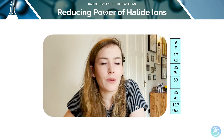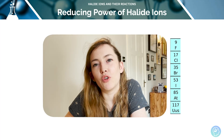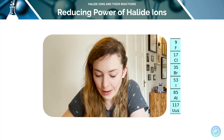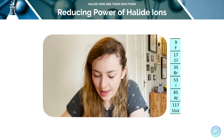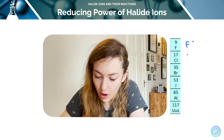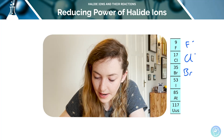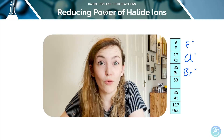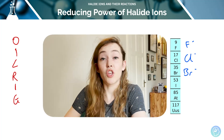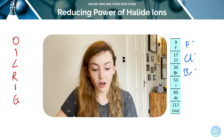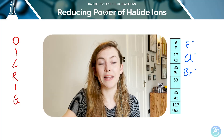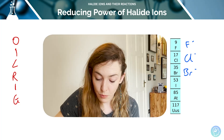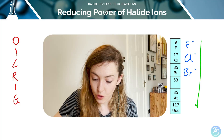What do you think the trend is in the reducing ability of the halide ions as you move down the group? We've got the halogens here — imagine these are their ions instead. What happens to their reducing ability as we move down? You might want to use OIL RIG to help. Reduction is gain, so their reducing ability increases as we move down the group.